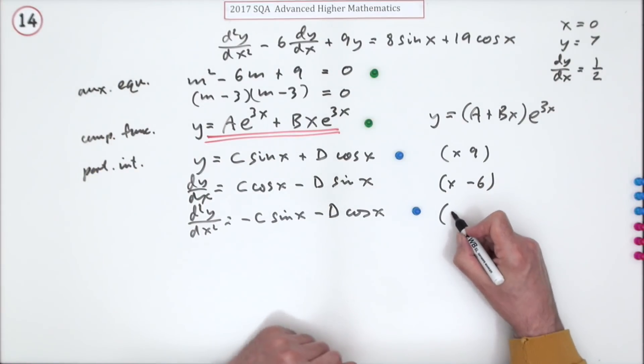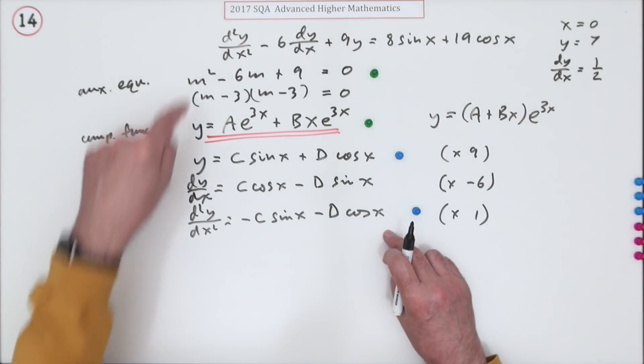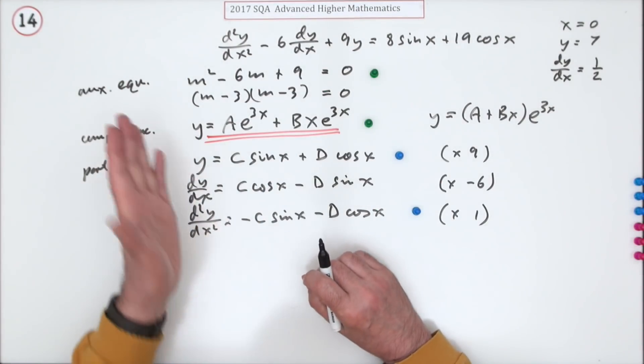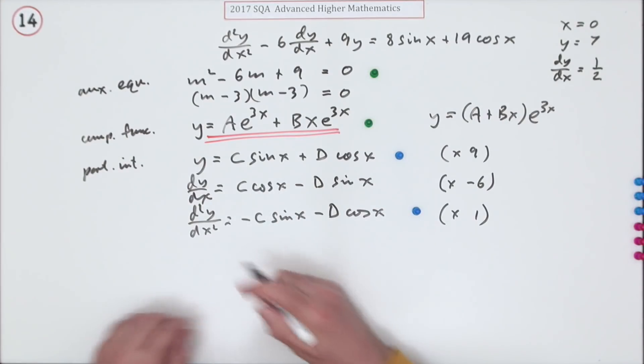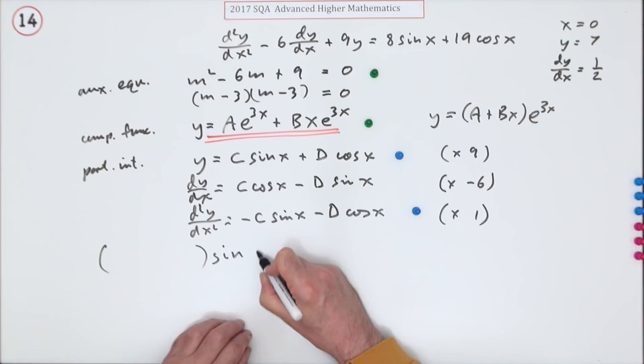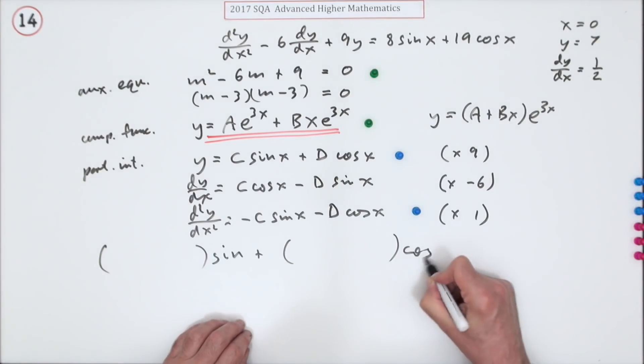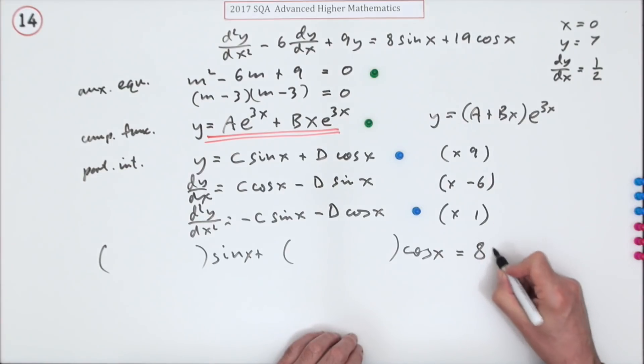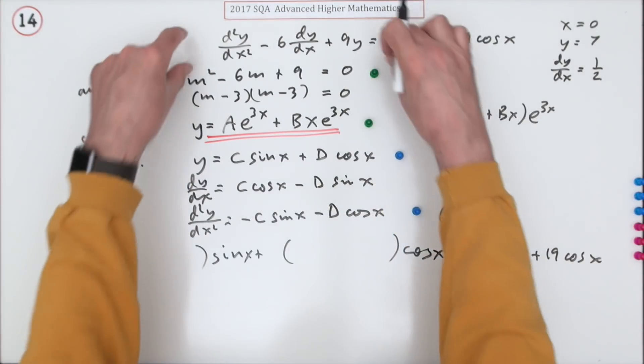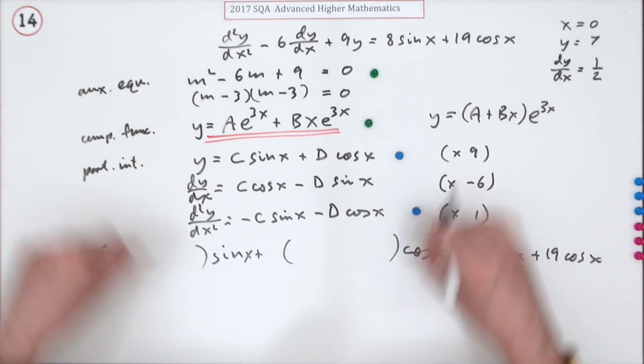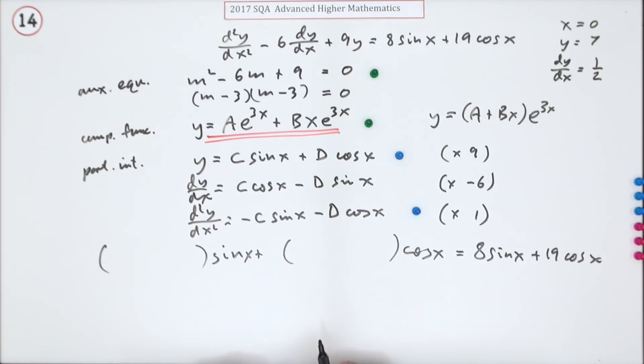Because obviously when you put this into this part here there's only two types of terms, sines and cosines. So I'm just going to put this part down here: I'll have a sine term and I'll have a cosine term equals 8 sin x plus 19 cos x. That's the equivalent part to feeding it into this - I'm feeding it in and tidying it up or gathering it up a bit at the same time.